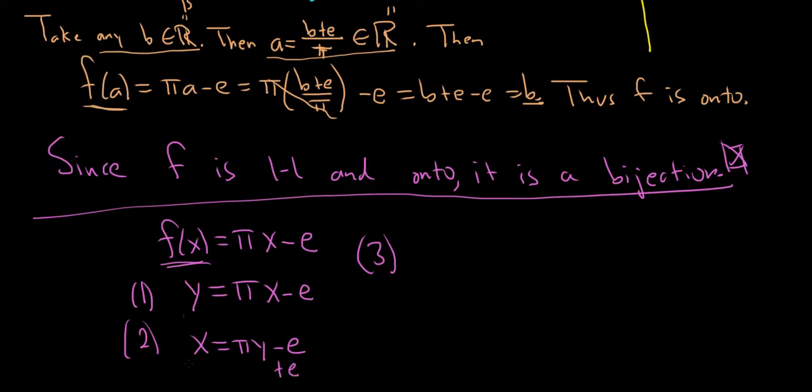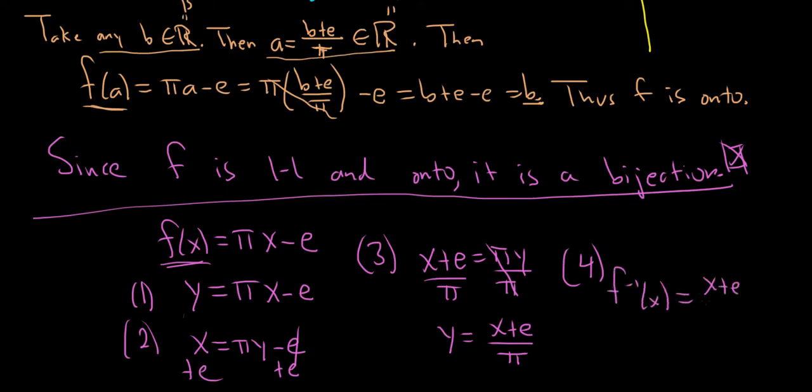So we'll add e. So we get x + e = πy. And then just divide by π. You get y = (x + e)/π. That's the inverse function. So the last thing to do is rename it. Our inverse function is (x + e)/π. And there's our inverse.